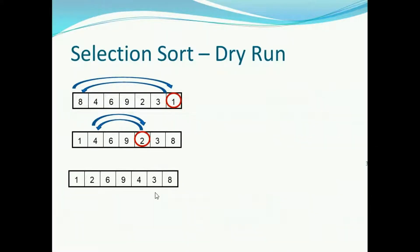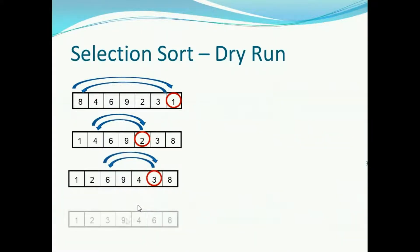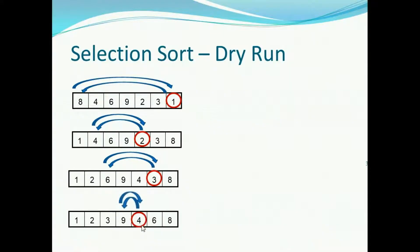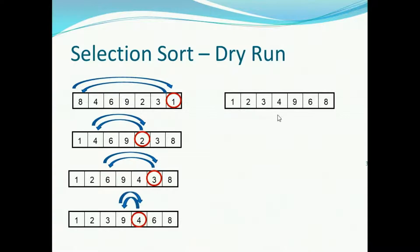Now 2 is the smallest remaining element, so exchanging it with the second place element. The resulting array we get has 2 in second place. Now 3 is the third smallest element, so exchange it with the third place element. The resultant array will look like this. Now 4 is the smallest remaining element, so exchanging it with the fourth place element.